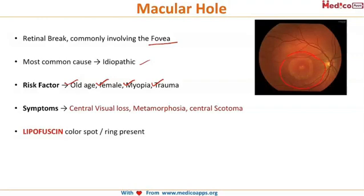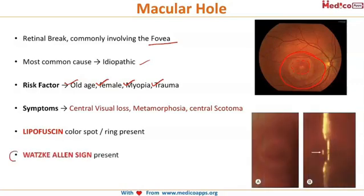This yellow lipofuscin-colored spot or ring over the fovea is characteristic of a macular hole. This lipofuscin ring is an important finding to recognize on fundoscopy.